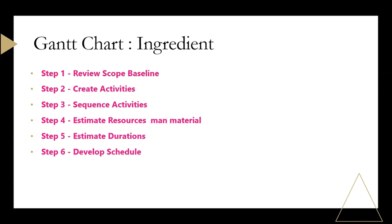Once you are done with your Work Breakdown Structure, you get different kinds of activities. The next step, step number three, is to sequence those activities. When it comes to sequencing, you have to use the four different dependency types I taught you in the previous video — whether activities are start-to-start, start-to-finish, or finish-to-start.